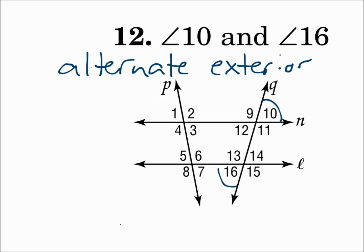Remember: lines that are in the same plane and don't intersect are parallel. Lines that are not in the same plane and don't intersect are skew — skew lines are not parallel but they don't intersect. Planes that don't intersect are parallel planes. Make sure you name everything correctly: bars over segments, three non-collinear points for planes. For the angle types: opposite corners outside the lines is alternate exterior; opposite corners inside the lines is alternate interior; same side of the transversal between the lines is consecutive interior; and if they're in the same position, like top right and top right, they're corresponding angles.